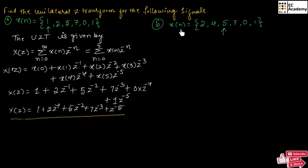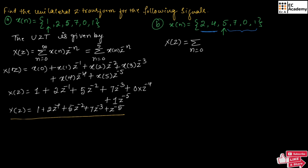Now let us take the second sequence where x of n is given. Observing this sequence, the value for n equal to 0, n equal to 1, n equal to 2, and n equal to 3 are noted, along with values for n equal to minus 1 and n equal to minus 2. While solving the problem, we need to neglect these negative values of n and consider only the non-negative values. Using the formula of unilateral Z transform, we write X of z equal to summation from n equal to 0 to 3.